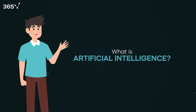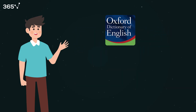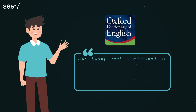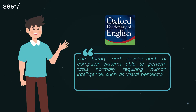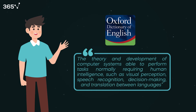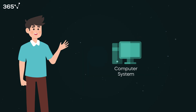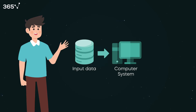What is AI? According to the Oxford Dictionary, AI is the theory and development of computer systems able to perform tasks normally requiring human intelligence, such as visual perception, speech recognition, decision-making, and translation between languages. Each time we design a computer system capable of learning autonomously based on input data and producing human-like output, we speak of AI.